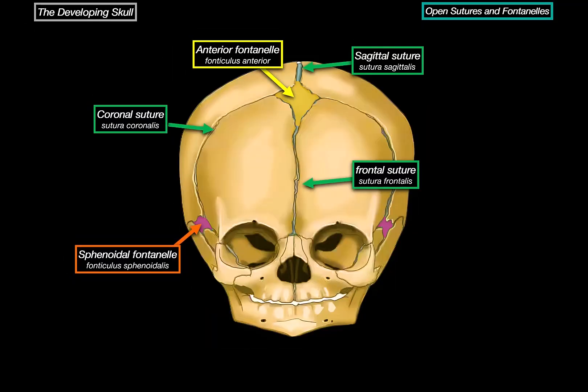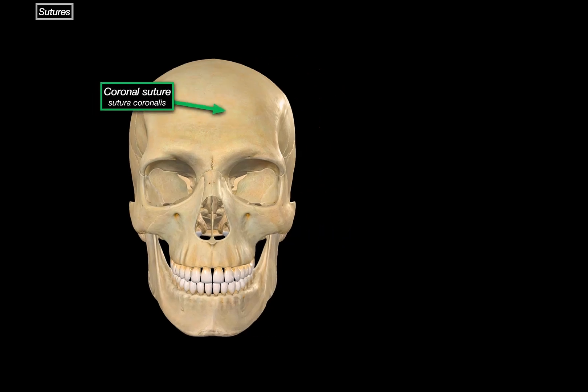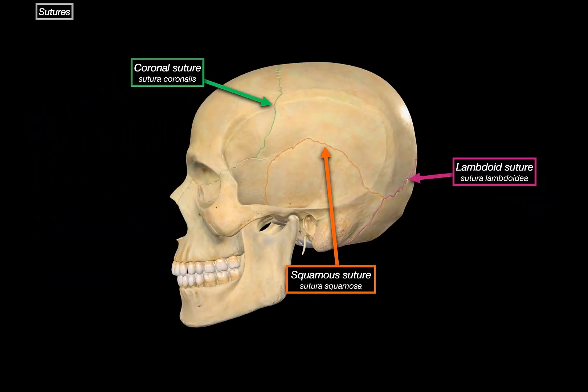Now let's replace the skull with an adult skull. By this point, the sutures have completely ossified, forming rigid joints between the bones, and the fontanelles have closed, replaced by these very same sutures and bones. From this view, we can see the coronal suture, which separates the frontal bone from the parietal bone.